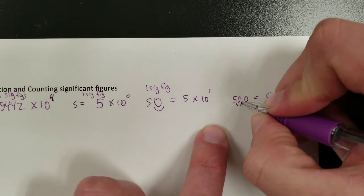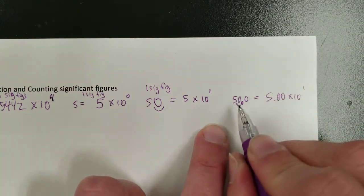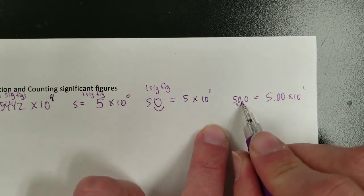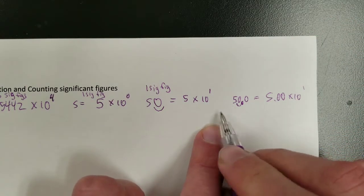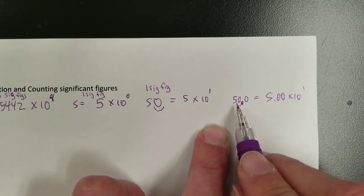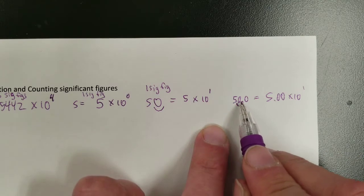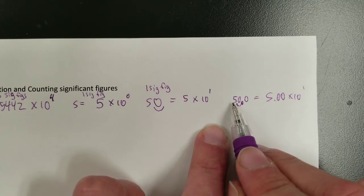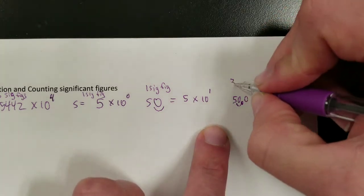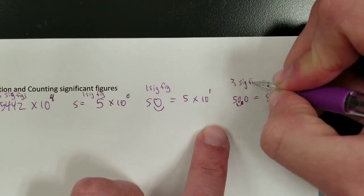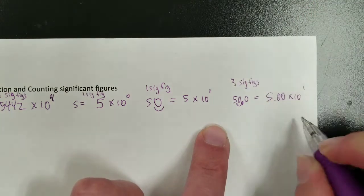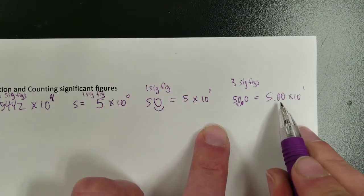For 50.0, because that decimal appears there, we count the trailing zeros — so that's 2 zeros plus a 5, giving 3 sig figs. That's why there are 3 digits in the scientific notation.